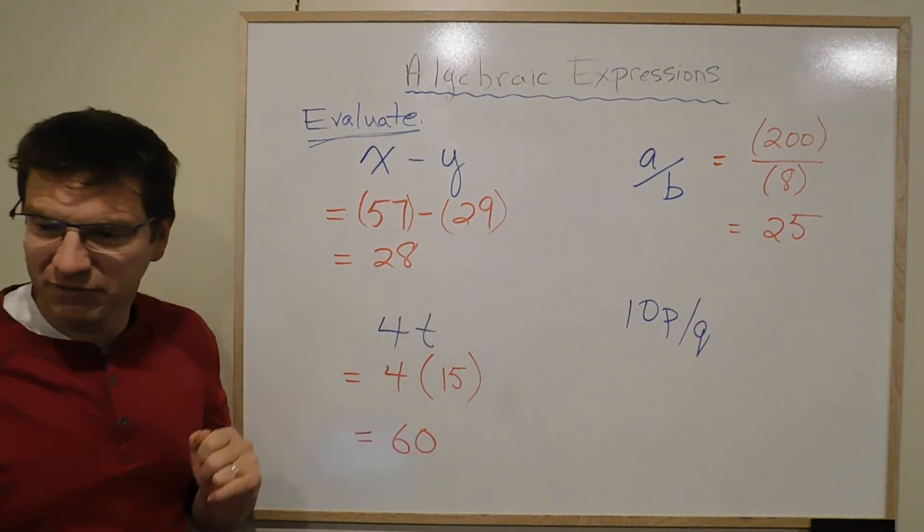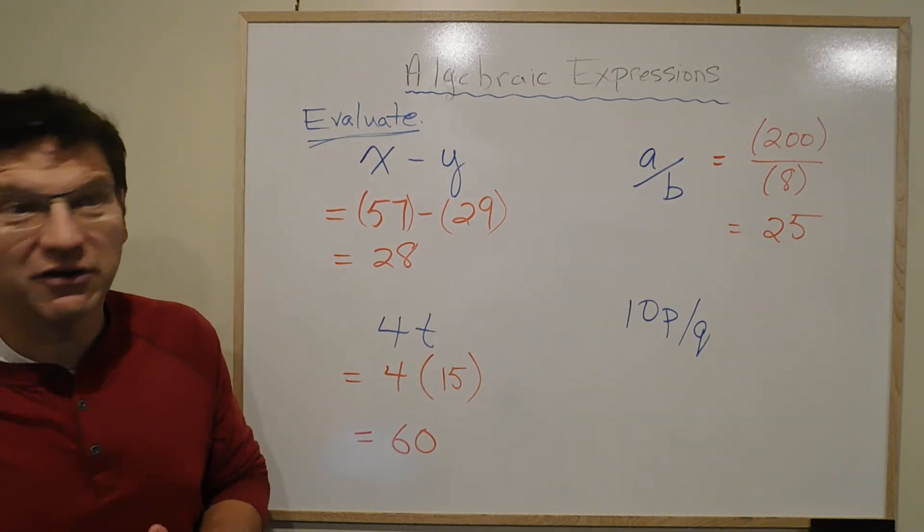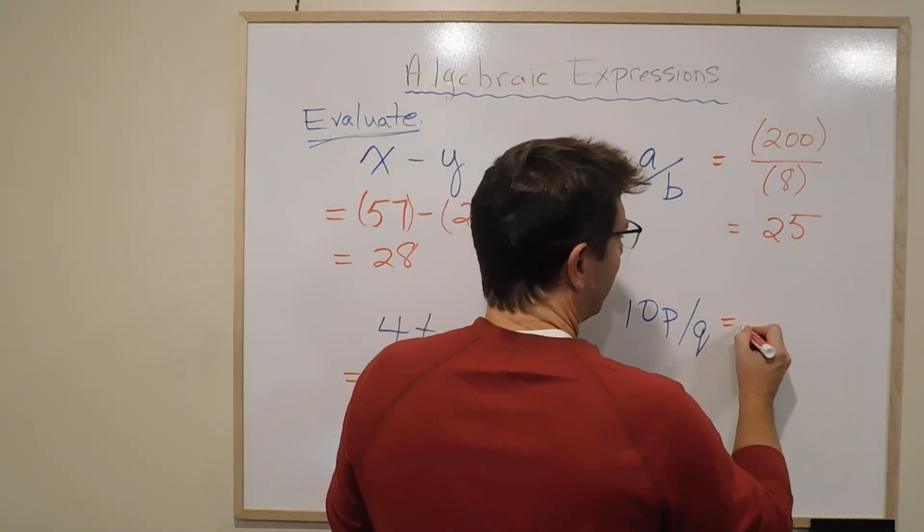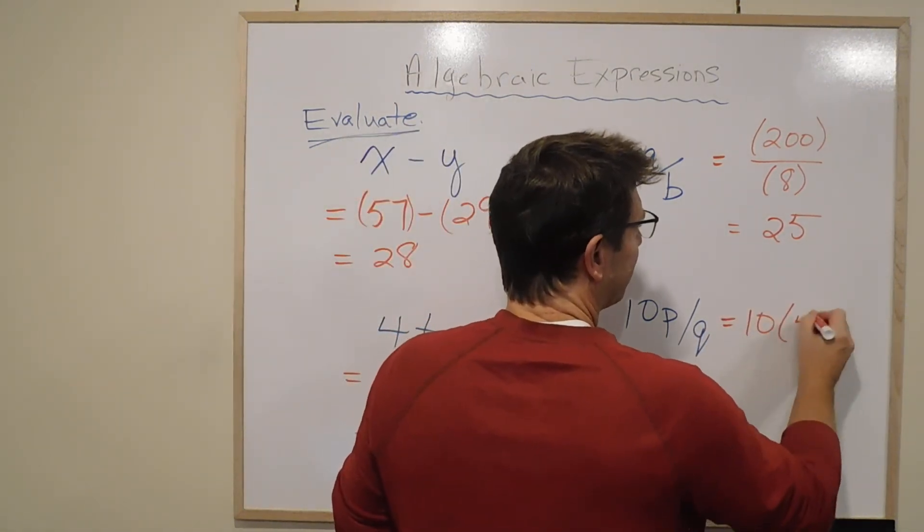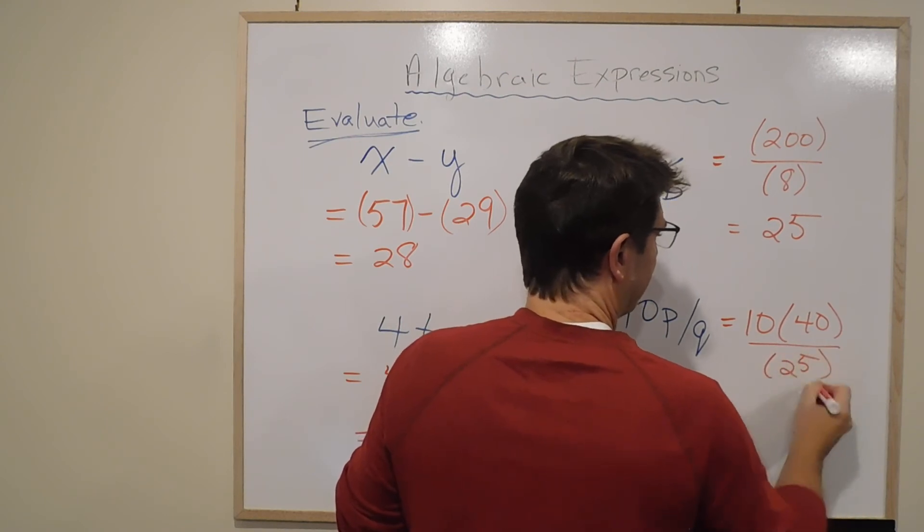And similarly, we'll do the fourth one. It tells us that p is 40 and q is 25. Well, we have 10, p is 40, and q is 25.